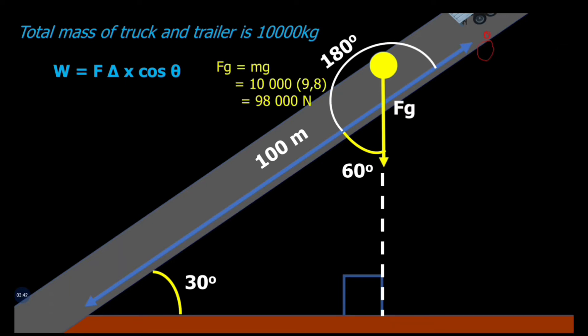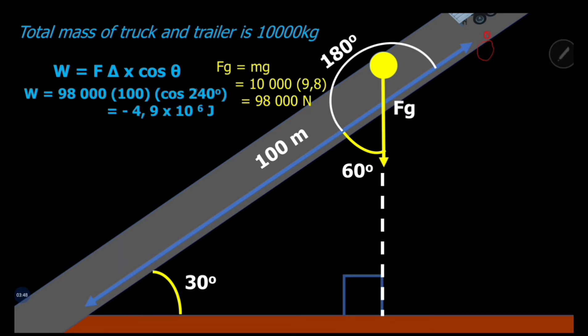The force of gravity is mg = 98,000 N. Feeding into the formula with cos240°, we again get negative 4.9 × 10⁶ joules. The negative work value makes sense — gravity opposes the upward motion, as discussed in the previous video on positive and negative work. That is the second method, using the full gravitational force rather than just its parallel component.